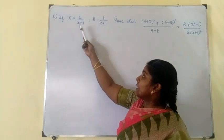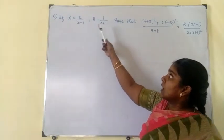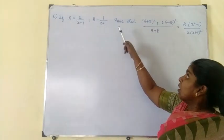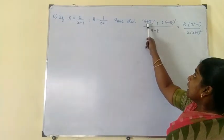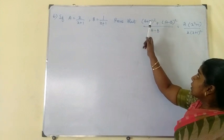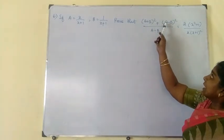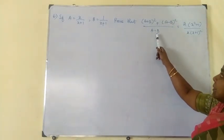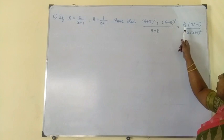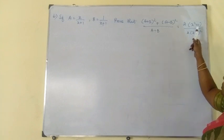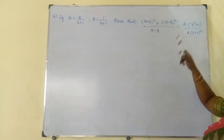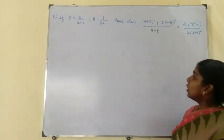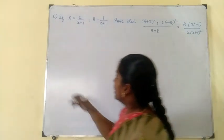If a is equal to x by x plus 1, and b is equal to 1 by x plus 1, prove that a plus b the whole square plus a minus b the whole square, divided by a divided by b, is equal to 2 into x square plus 1, by x into x plus 1 the whole square.